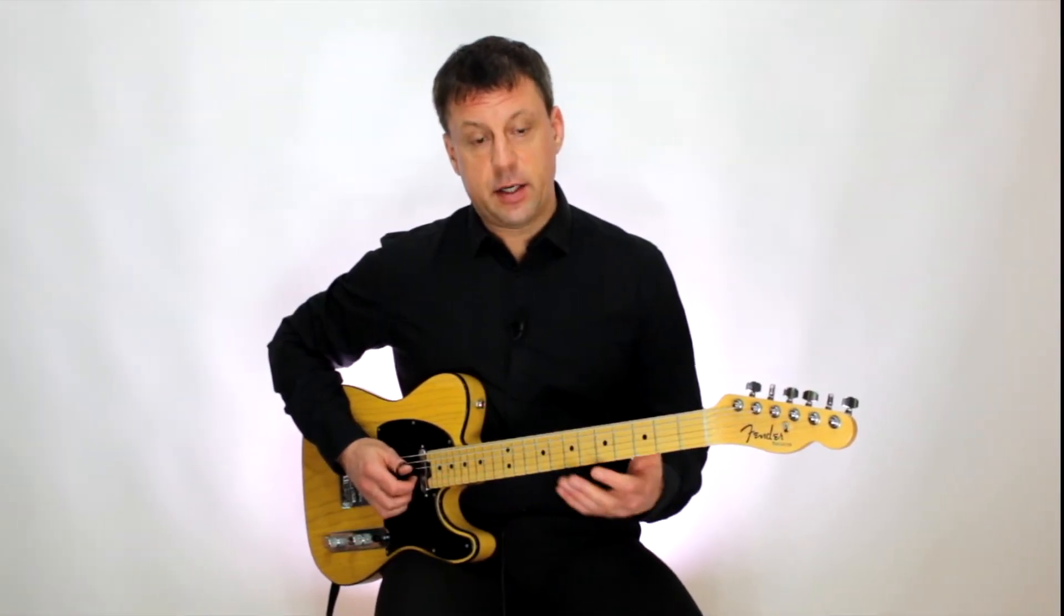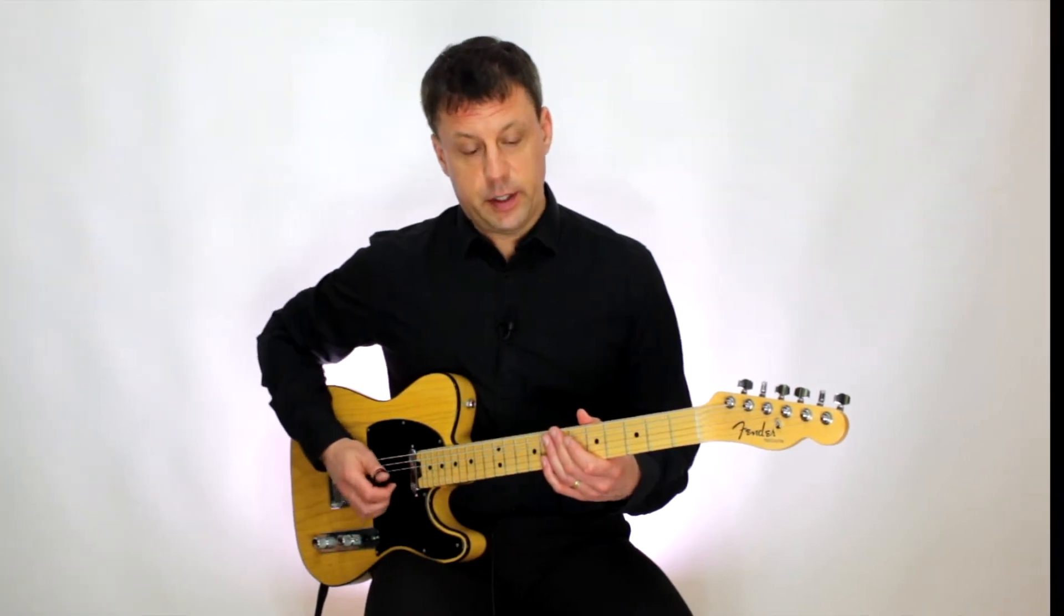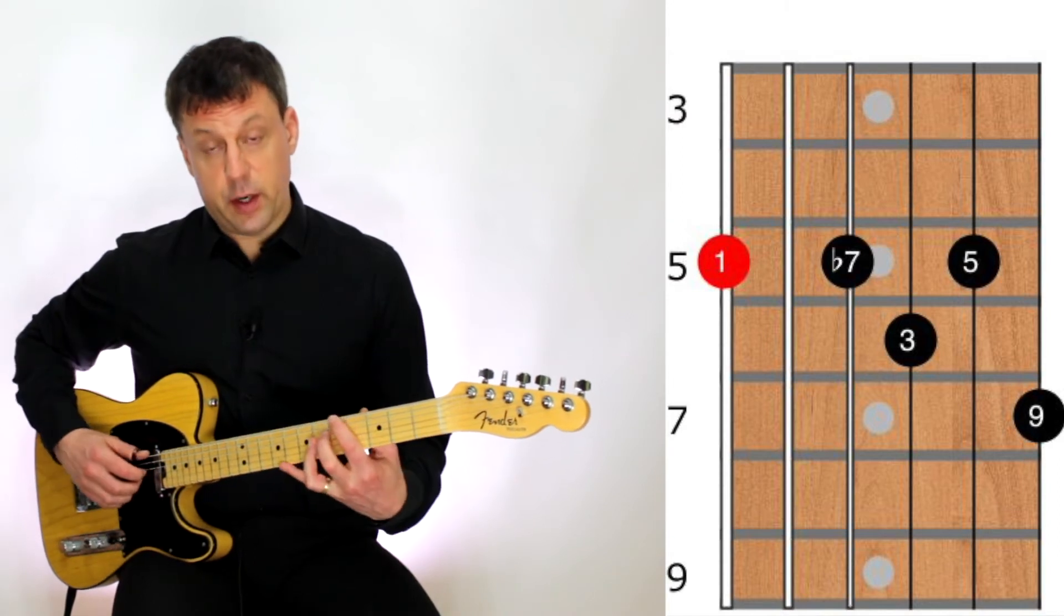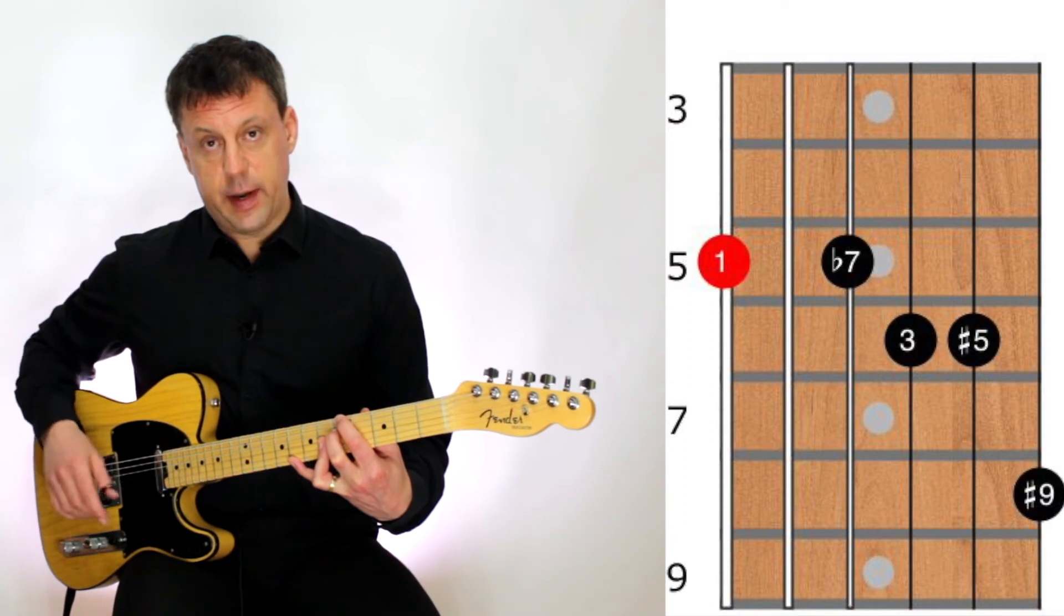Now, many of these chords you could actually add a low bass note to on your low E string or A string. For instance, the first chord, the A9, I could put the A on fret 5 on my thick string, and also on that A dominant 7 sharp 5 sharp 9 if you need the bass and a fatter sound.